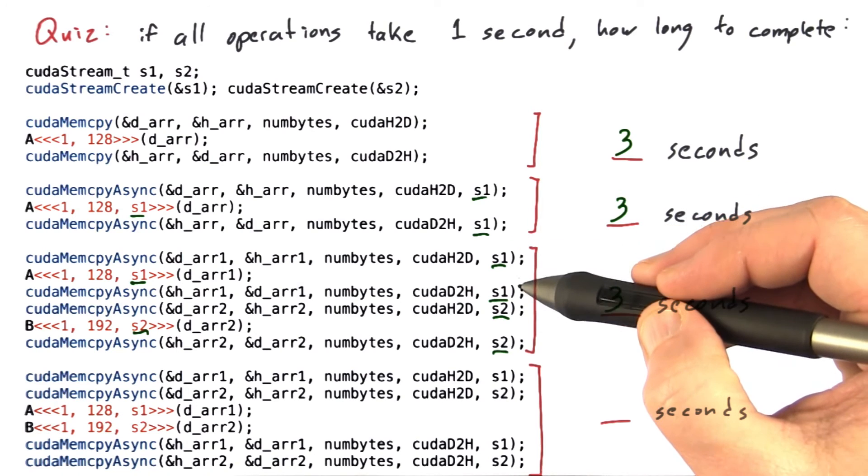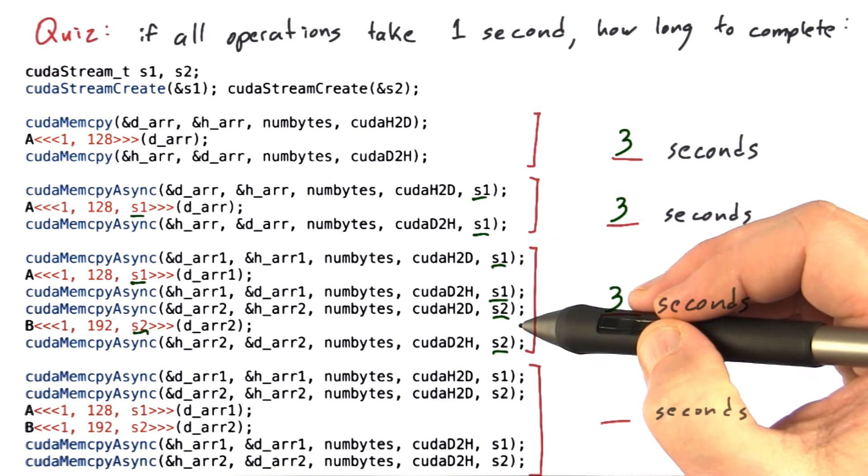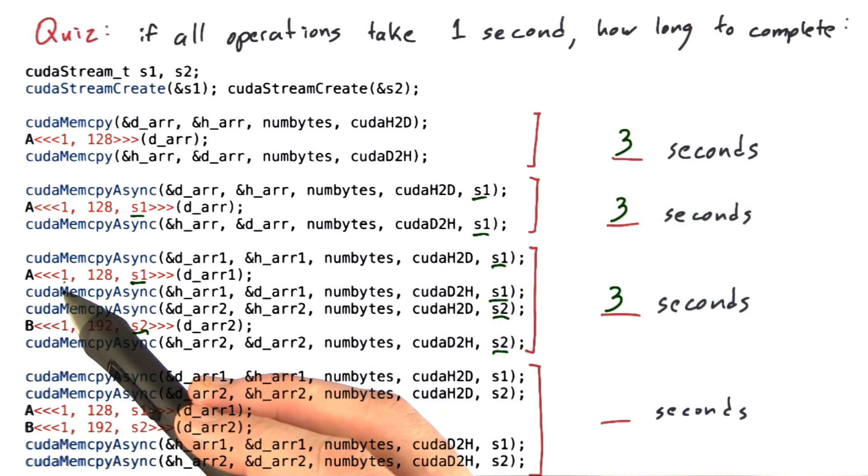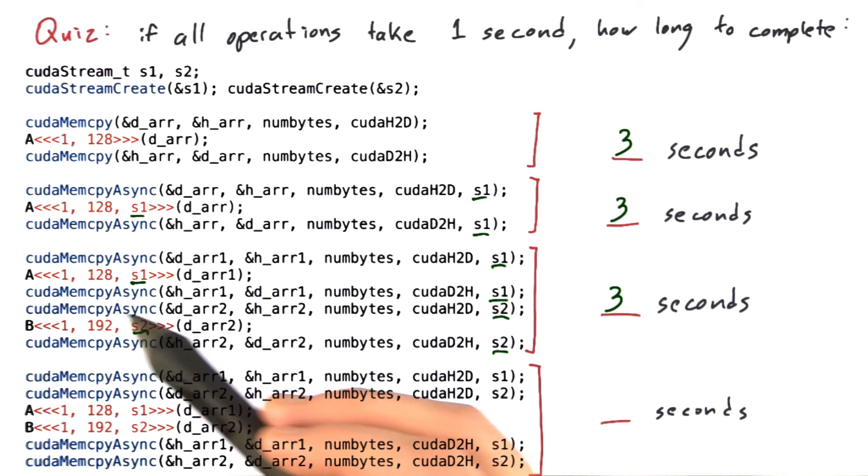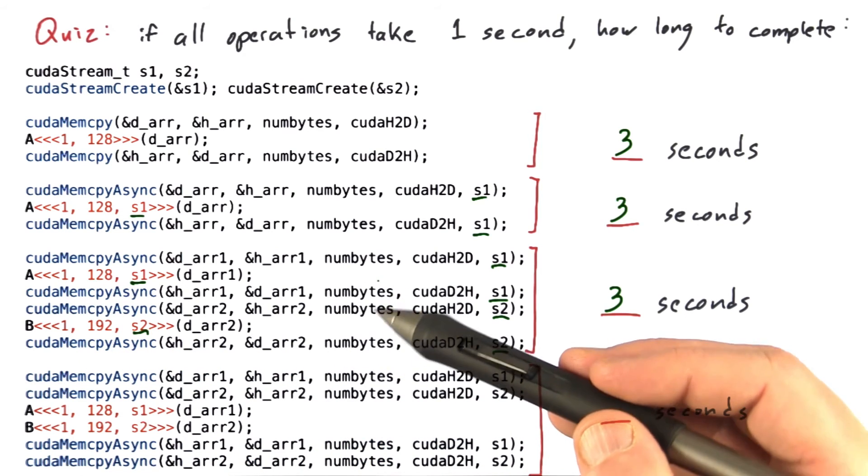Some older GPUs can't do this many asynchronous memcopies at the same time. And I was pretty careful to launch a single block, so this probably will not fill the GPU.